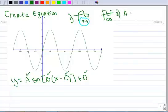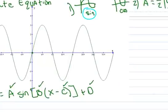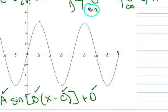And the a is one-half the absolute value of y max minus y min. So let's go look at the graph, and it looks like I have a maximum at three, and it looks like I have a minimum at negative three.